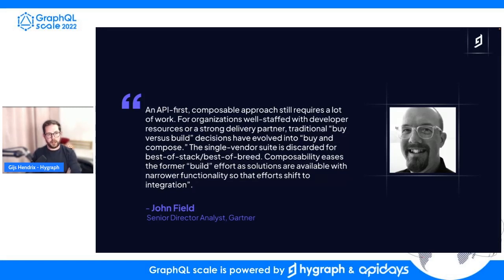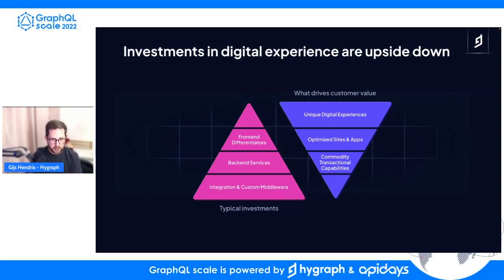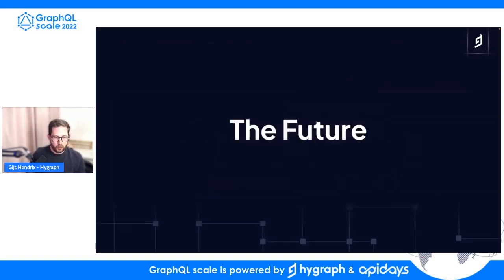Increasingly, analysts in the market like Gartner and Forrester are recognizing the same thing — there's a lot of work involved in this composable approach. You either need a lot of developer resources or a strong delivery partner, and you're forced to develop a lot of domain knowledge and spend significant time and money putting together a solution. Integration is where all the pain is. This leads to a situation where a lot of businesses have their digital experience investments upside down — a large IT organization spending significant time on integration and custom middleware, whereas the real customer value comes from the unique digital experience.